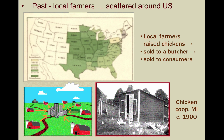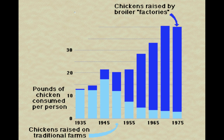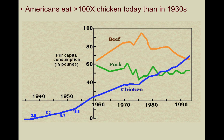Today, the vast majority of chickens are raised in broiler houses and are especially concentrated in the Southeast. Broiler raising is the main job of a few producers, not so much the side job of many independent farmers. This graph shows that the consumption of chickens has increased greatly, and since the 1950s, most broilers have been raised in factories, not on individual farms. Today, we Americans eat more than 100 times the amount of chickens than in the 1930s.